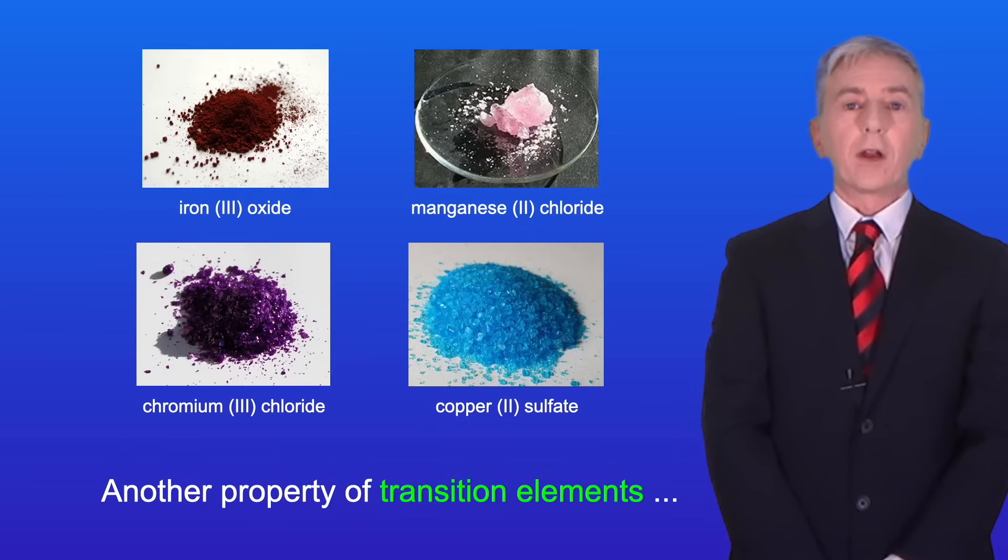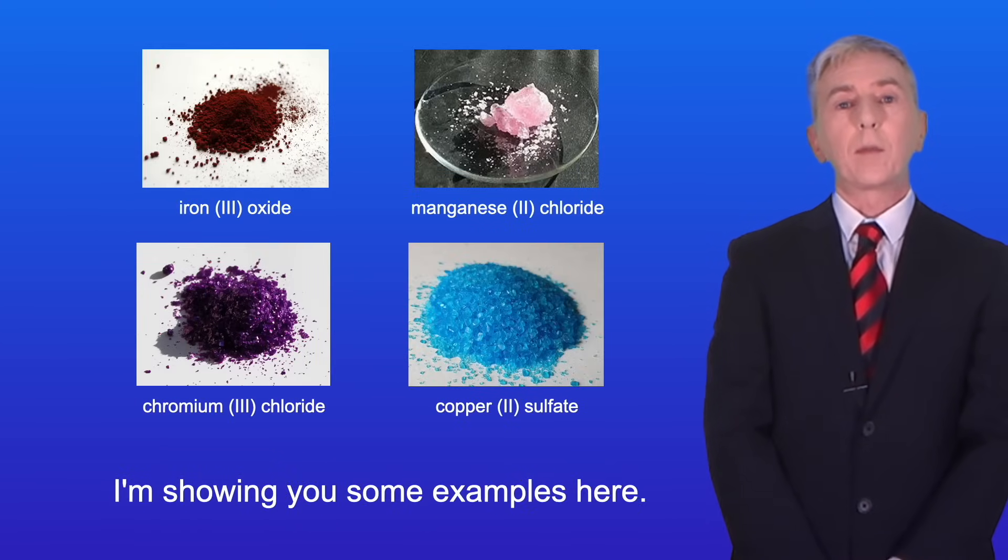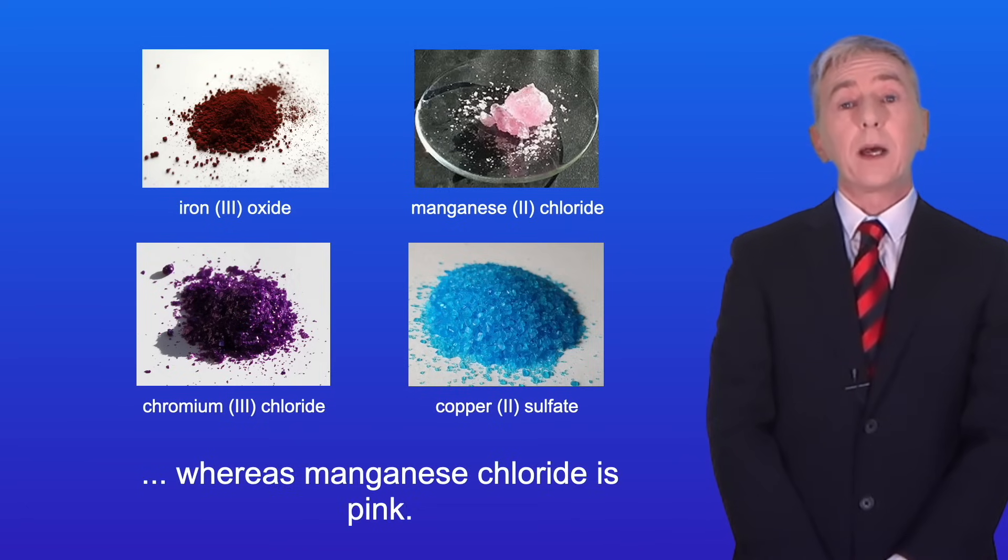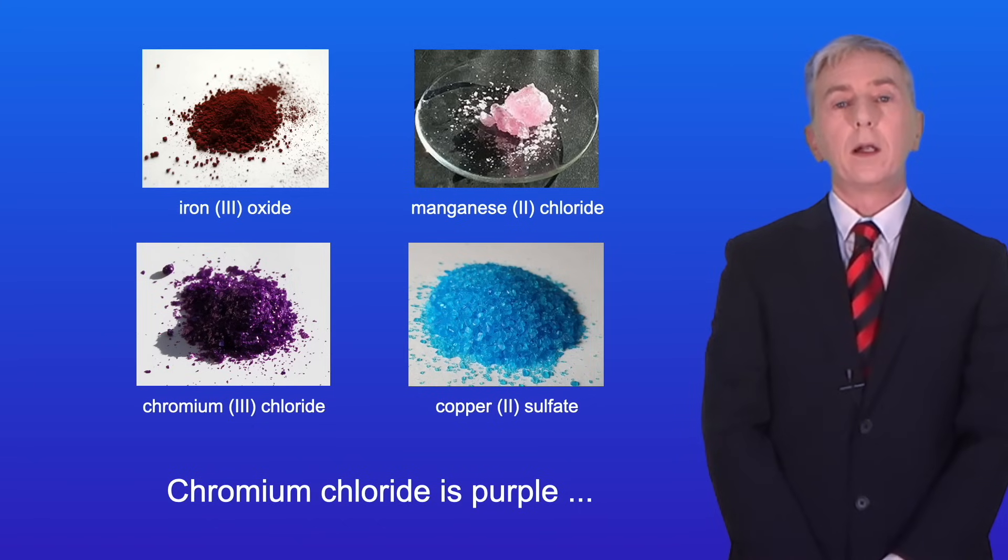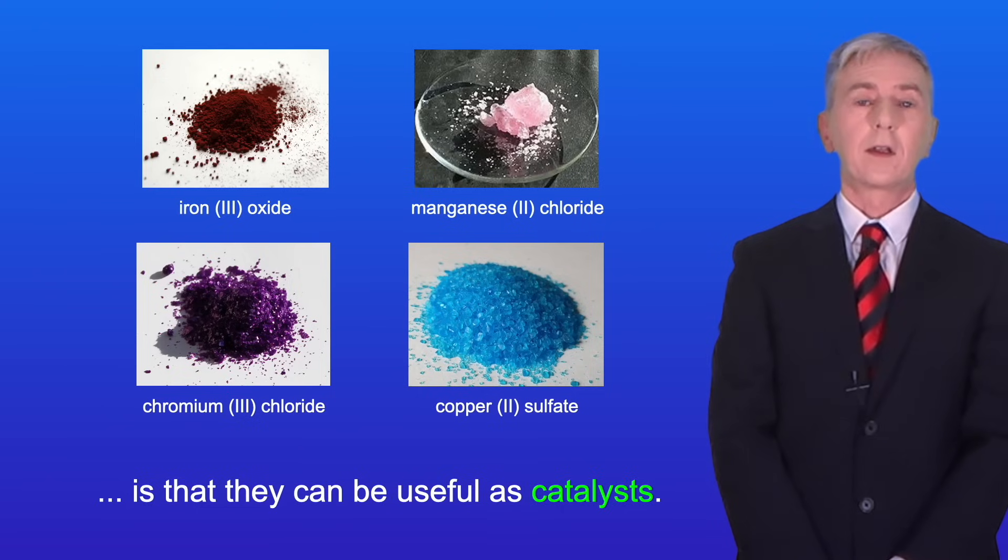Another property of transition elements is that they form coloured compounds and I'm showing you some examples here. Iron oxide has a reddish colour, whereas manganese chloride is pink. Chromium chloride is purple and copper sulphate is blue.